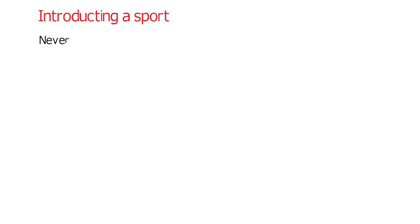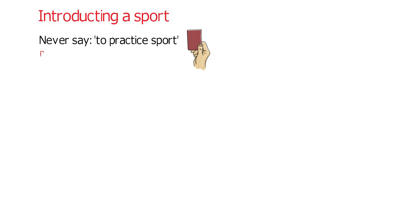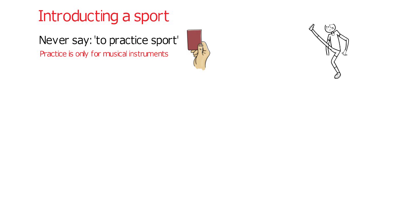So how do you introduce a sport in English? Well, we never say 'to practice a sport' — this is an error. We only use the verb 'practice' for musical instruments. To express sports in English, select one of the three verbs depending on the sport.